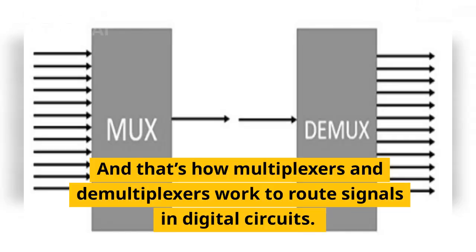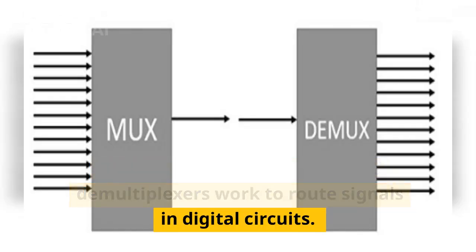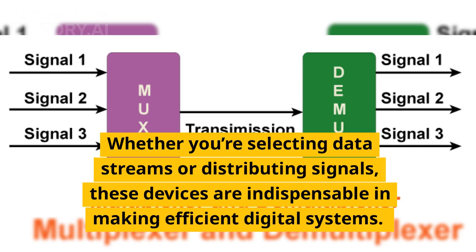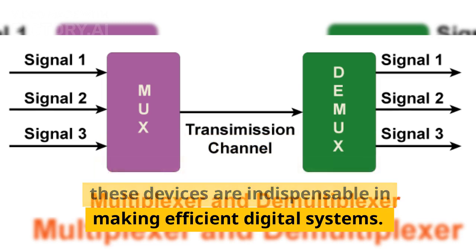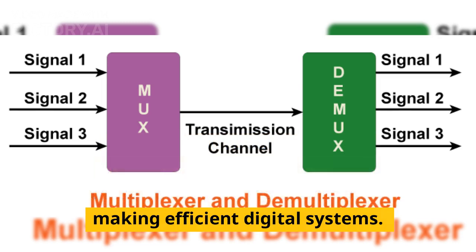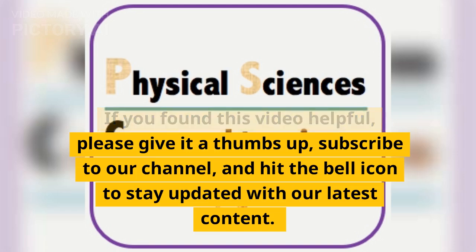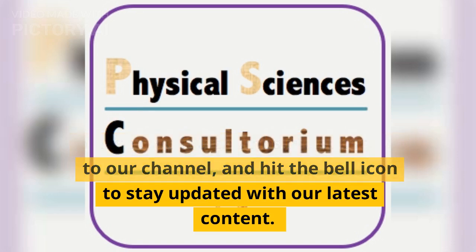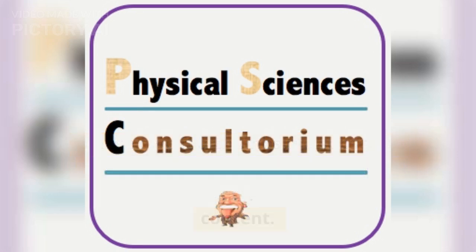And that's how multiplexers and demultiplexers work to route signals in digital circuits. Whether you're selecting data streams or distributing signals, these devices are indispensable in making efficient digital systems. If you found this video helpful, please give it a thumbs up, subscribe to our channel, and hit the bell icon to stay updated with our latest content.